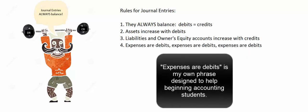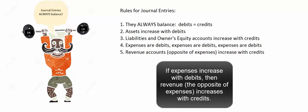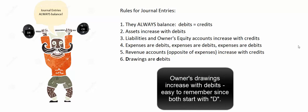Expenses are debits. Most of the time in the real world we're writing checks — debiting rent expense and crediting cash, debiting salaries and wages expense and crediting cash. If you can remember that expenses are debits, you can figure out what happens to all other accounts. The opposite of expenses is revenue, so revenue accounts must increase with credits. And lastly, owner's drawing accounts increase with debits — when the owner takes money out, we debit owner's drawings and credit cash.